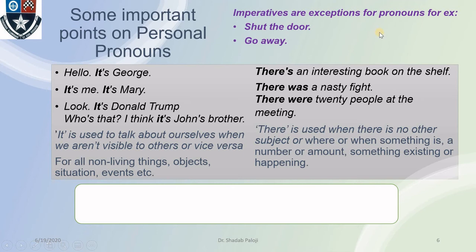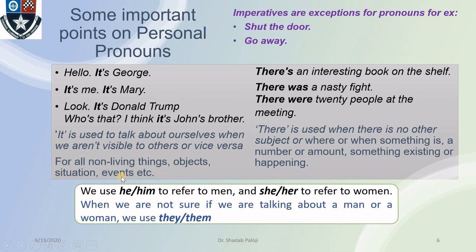We should also remember some imperatives. 'It' and 'there' are used when there are subjects to be involved, but when we are using imperative statements, we may not use any subject. For example, 'shut the door' — generally it would be 'you shut the door,' but it is understood that there is a pronoun there and therefore we do not actually use it. Also, when we use 'he' or 'him,' it refers to men; when we use 'she' or 'her,' it refers to women. But when we are not sure whether we are talking about a man or a woman, we use 'they' or 'them.'